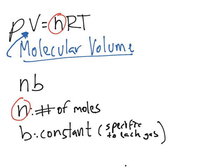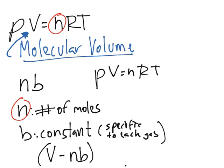And you will most likely be given that constant. So we have to add that to the volume, and it's a subtraction. So V minus nb. So instead of PV equals nRT, we'll now have P(V - nb) equals nRT.